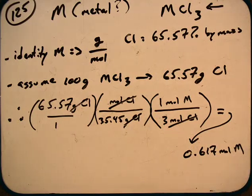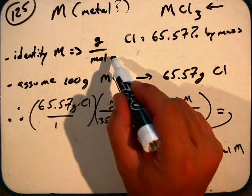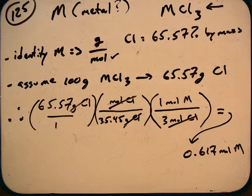And so we get 0.617 moles of this unknown metal. So we have the mole value for this atomic mass. Now we need the gram value. So how do we do that?